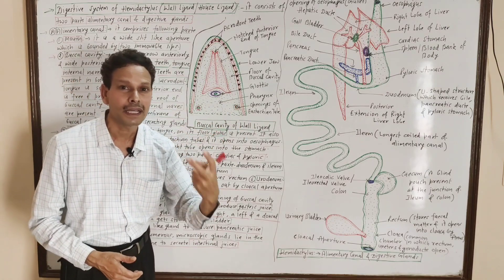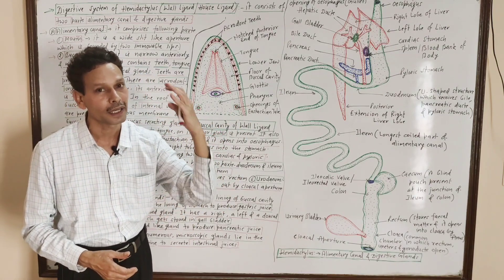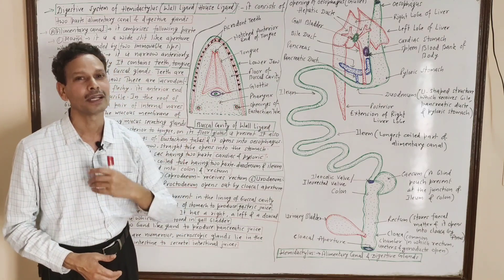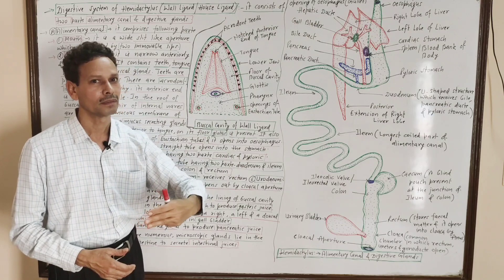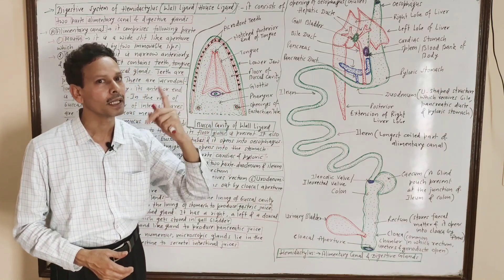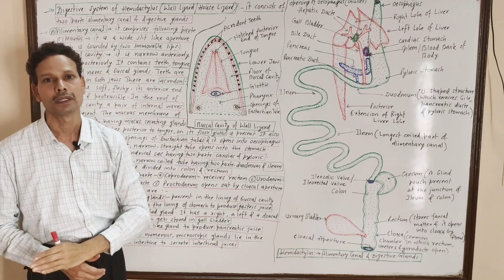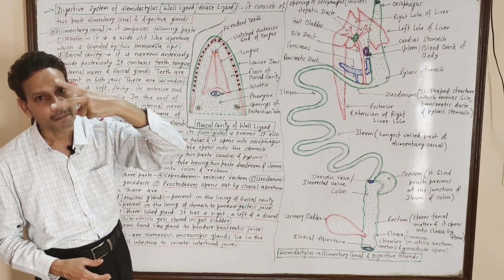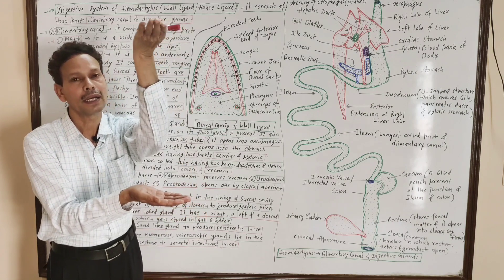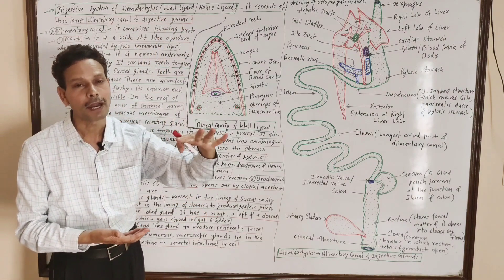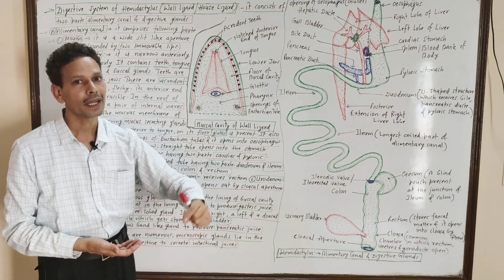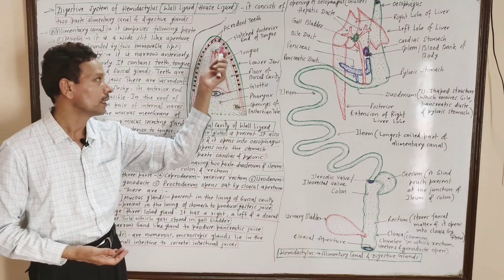All teeth in the case of wall lizard Hemidactylus are identical — they are similar teeth, these are homodont. And these are acrodont, like the frog in Amphibia. In the case of mammals such as rats and human beings, our teeth are thecodont, as our teeth get inserted in a bony socket. But here the teeth directly attach to the bony surface by cementing material — these are acrodont.